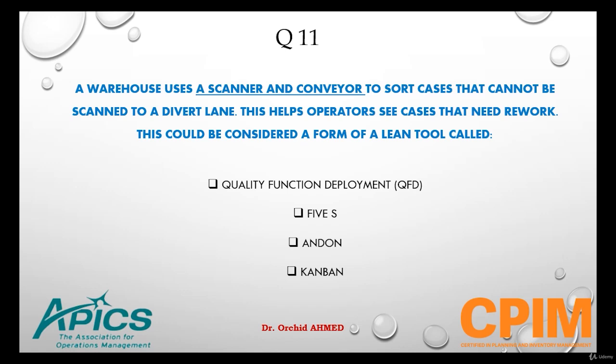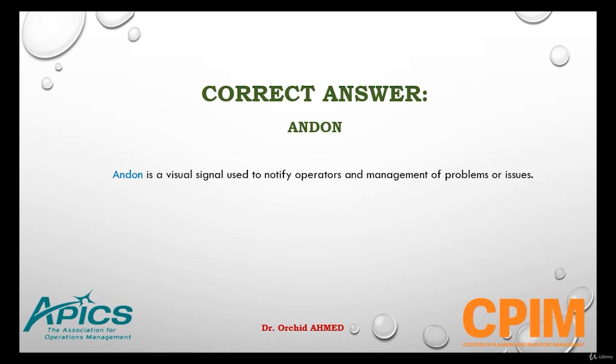This could be considered a form of a lean tool. The warehouse scanner and conveyor system would be considered a form of lean tool called Andon. Andon is a visual system used to notify operators and management of problems or issues.